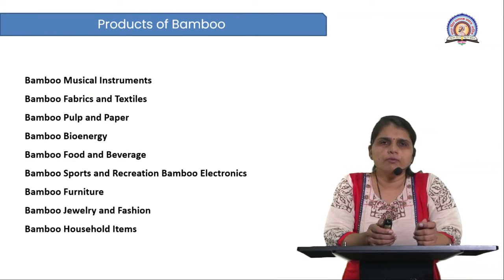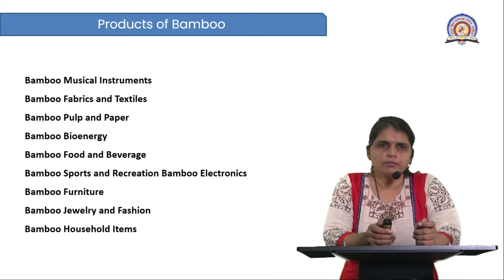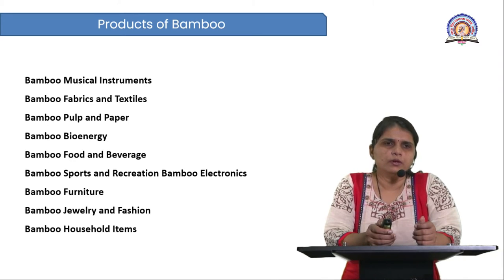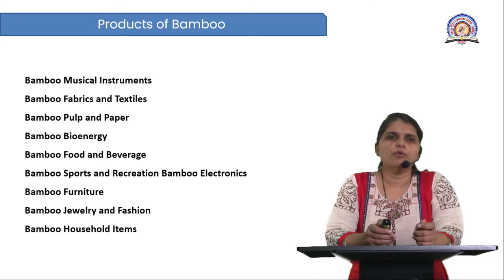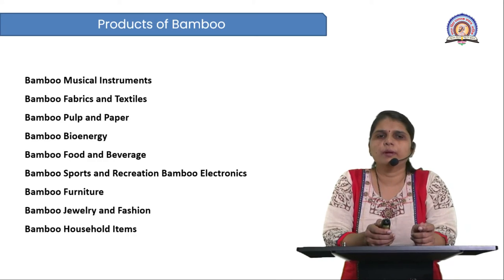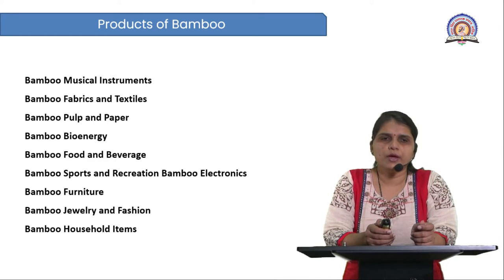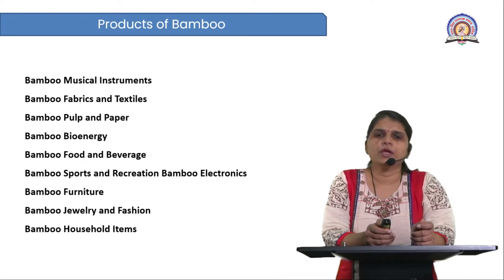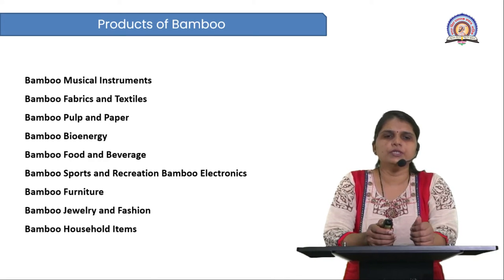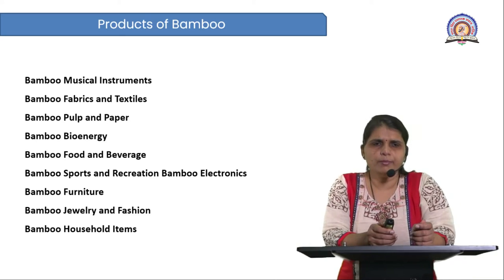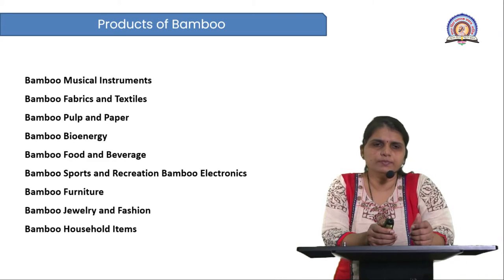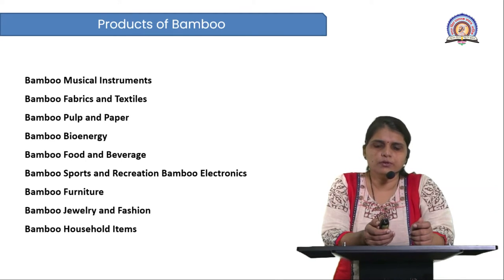You can see one by one the products of bamboo. Products made by bamboo include: musical instruments, bamboo fabrics and textile industry, bamboo pulp and paper industry, bamboo use in bioenergy, bamboo food and beverages, bamboo sports and recreation, bamboo electronics material, bamboo furniture, bamboo jewellery and fashion, and bamboo household items.